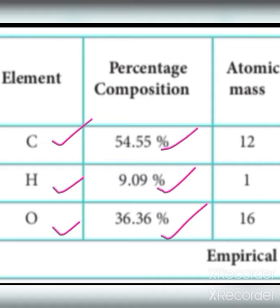Steps 1 and 2 are complete. Now calculate the number of moles. The atomic masses are: carbon is 12, hydrogen is 1, and oxygen is 16.